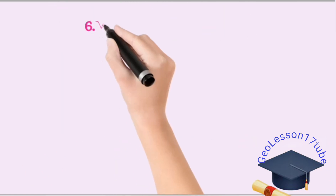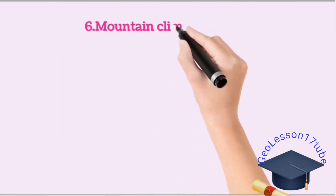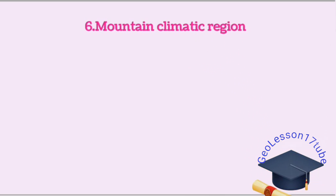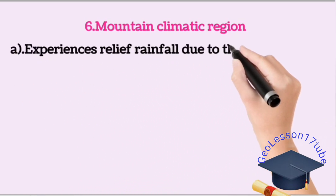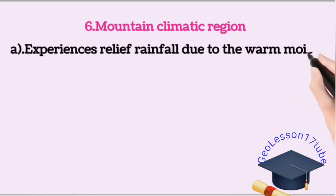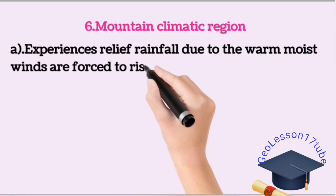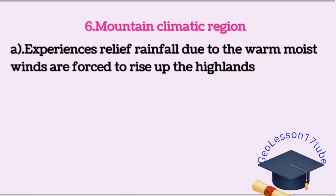The mountain climatic region experiences relief rainfall, because warm, moist winds are forced to rise up to the highland. The temperature at the highest peak in the mountain climatic region is below freezing point — less than zero degrees.